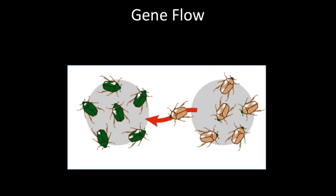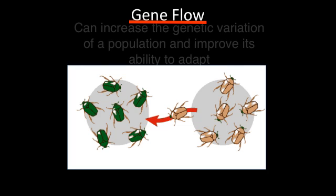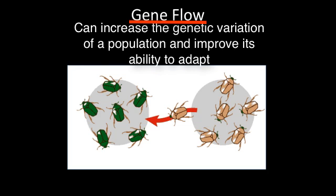Natural selection and genetic drift are not the only phenomena that can affect allele frequencies. The transfer of alleles into or out of a population due to immigration or emigration of reproducing individuals is called gene flow, and it happens between neighboring populations. Gene flow can increase the genetic variation of a population, improve its ability to adapt, and tends to reduce differences between populations over time. Gene flow is also more likely than mutation to alter allele frequencies directly.